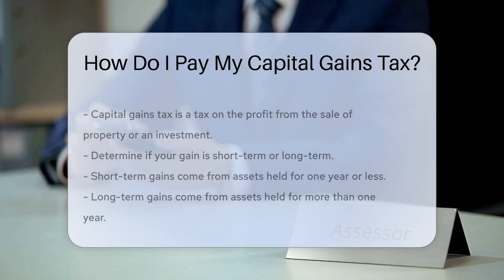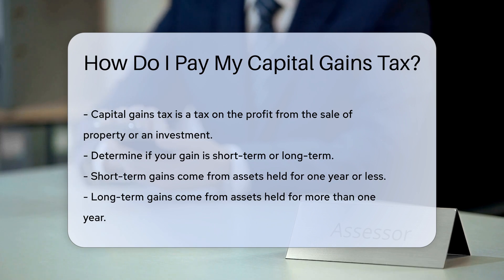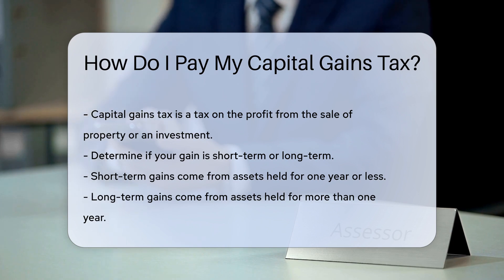Capital gains tax is a tax on the profit from the sale of property or an investment. First, determine if your gain is short-term or long-term. Short-term gains come from assets held for one year or less. Long-term gains come from assets held for more than one year. The tax rates for long-term gains are generally lower than for short-term gains.